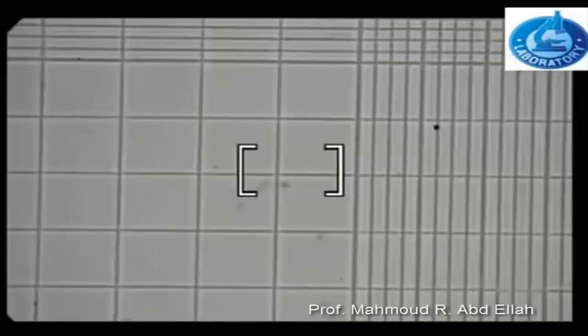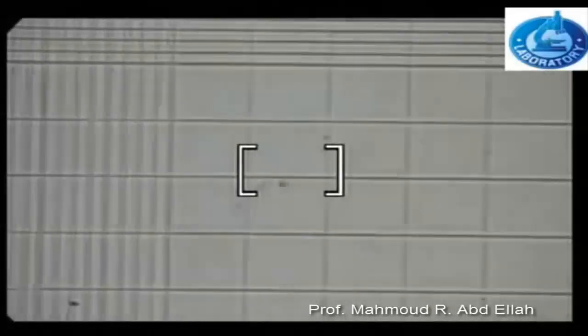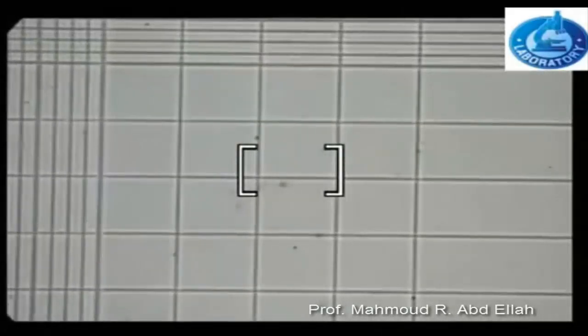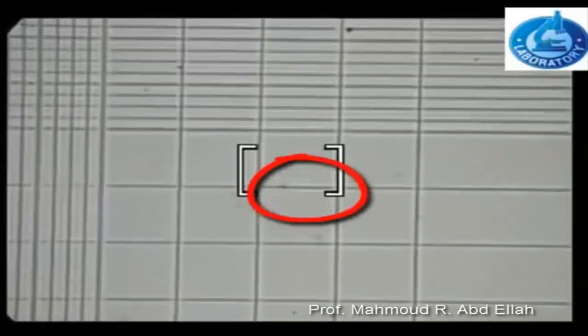At the corners of the large square, there are 4 squares used for counting the white blood cells.